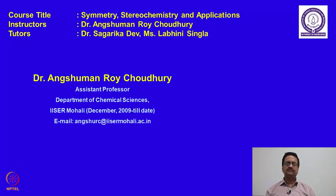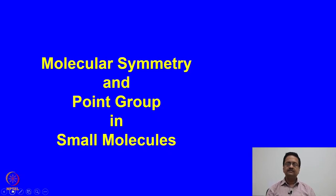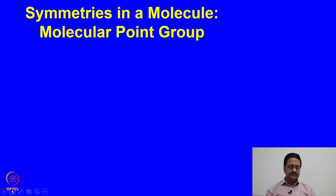Welcome back to the course on Symmetry, Stereochemistry and Applications. In the previous two lectures, we have tried to understand the various symmetry elements that a molecule can have and we have tried to show how you can find out different symmetry elements present in a given molecule. When we try to find out the symmetries present in a molecule, we try to identify those symmetries using some name — and that name is called the molecular point group.